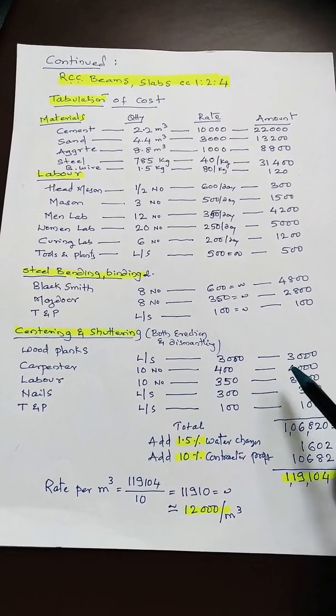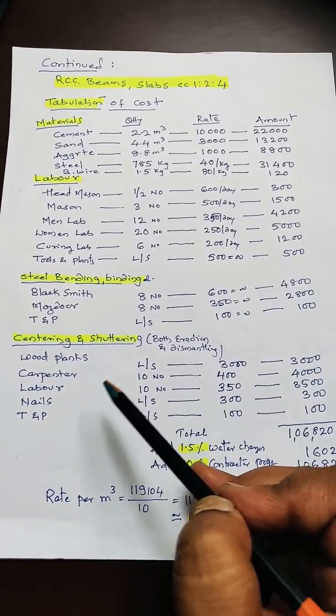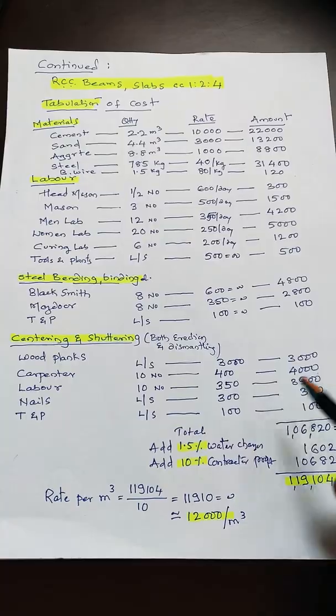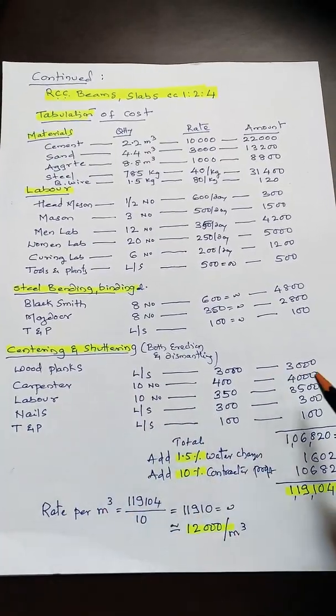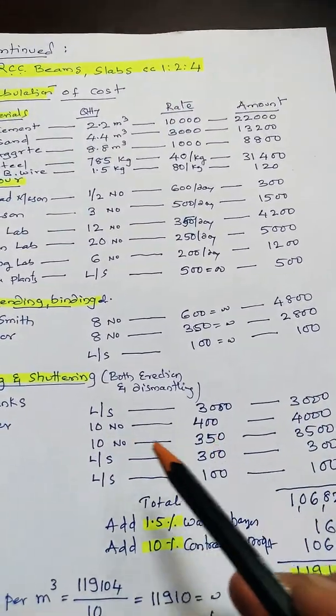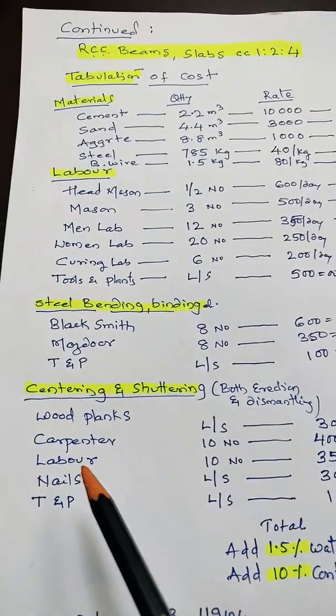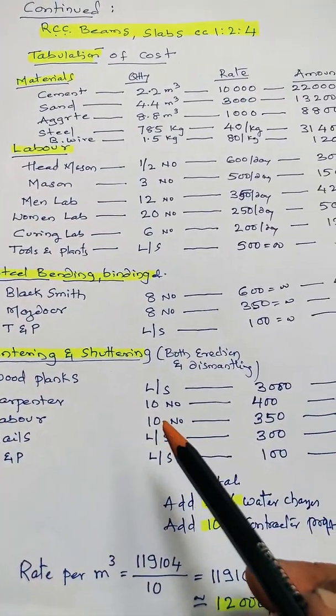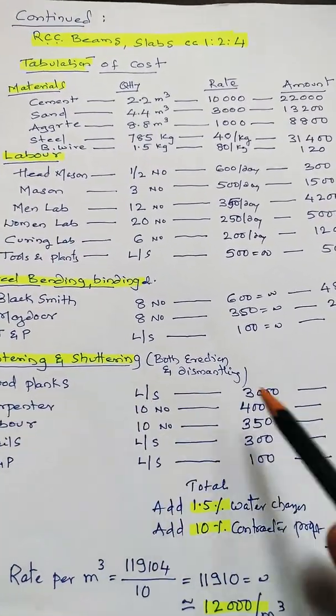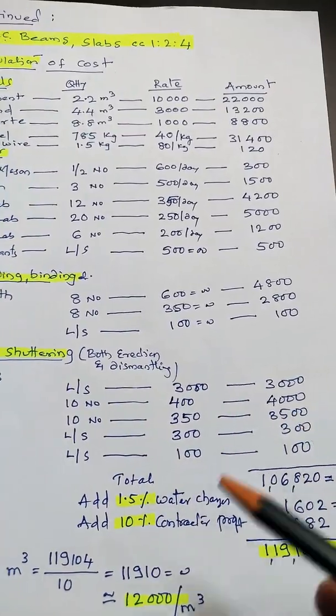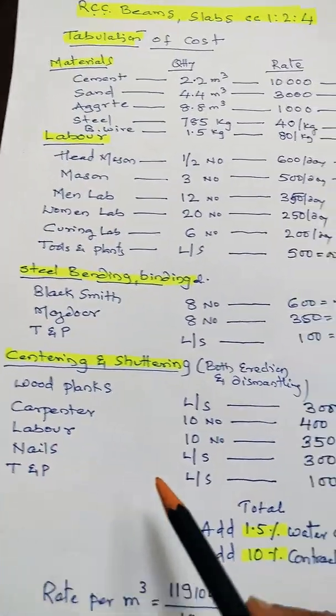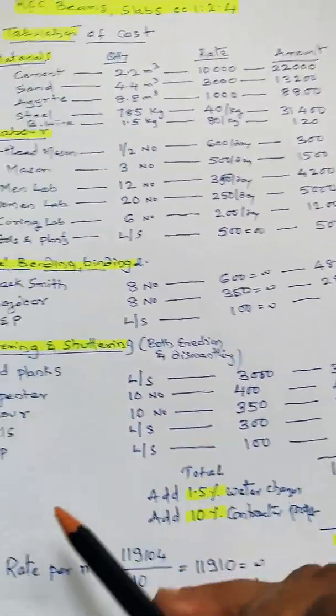You need carpenters to nail, cut, and adjust the centering material - 10 carpenters for 10 meter cube. Laborers: 10 numbers for helping the carpenters at 350 = 3,500. Nails: lump sum 300 rupees for 10 meter cube. Tools and plants: 100 rupees.